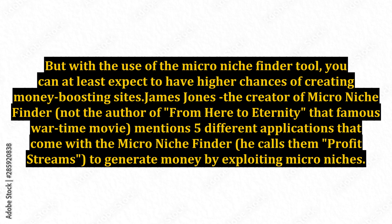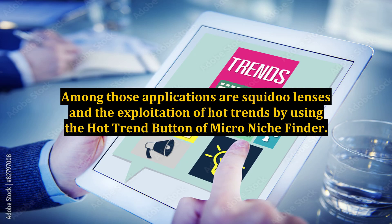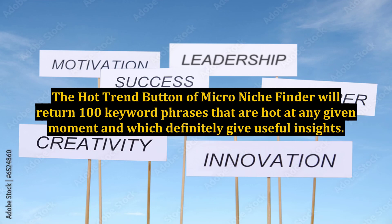James Jones, the creator of Micro Niche Finder — not the author of From Here to Eternity, that famous wartime movie — mentions five different applications that come with the Micro Niche Finder, which he calls profit streams, to generate money by exploiting micro niches. Among those applications are Squidoo lenses and the exploitation of hot trends by using the hot trend button. The hot trend button of Micro Niche Finder will return 100 keyword phrases that are hot at any given moment, and which definitely give useful insights.